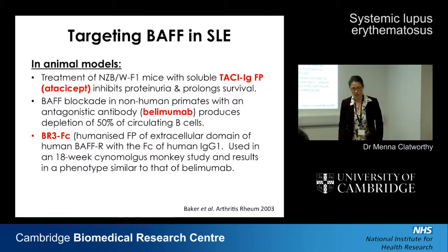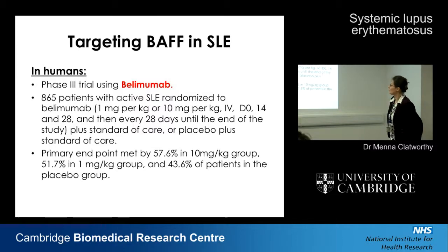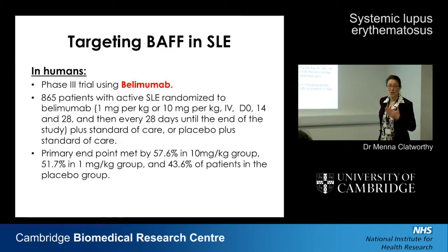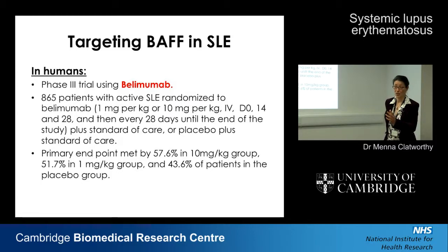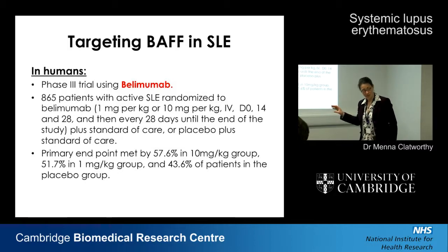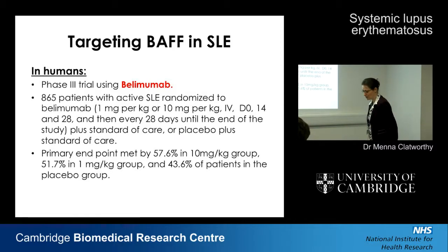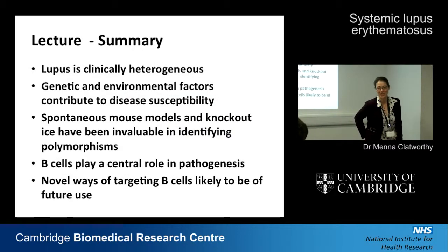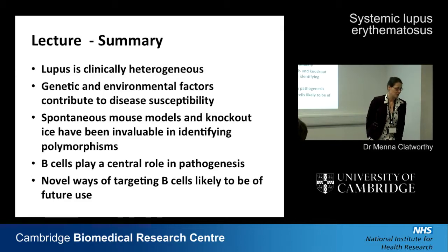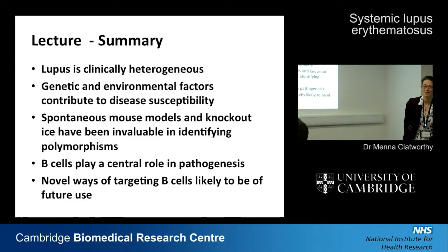Belimumab has been used in a number of trials — I've given you one of the key phase three trials in your reference list. The data show it's certainly more effective than standard of care, which includes things like cyclophosphamide, and importantly comes without the future risk of malignancy. Cyclophosphamide also has severe effects on fertility, which matters greatly given the nine-to-one female-to-male ratio in lupus. Belimumab is the first new drug to be licensed for lupus in 50 years — a real turning point in treatment.